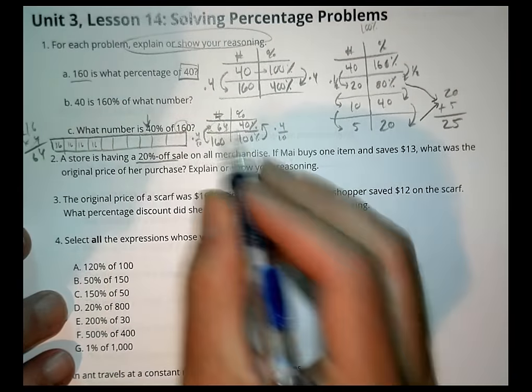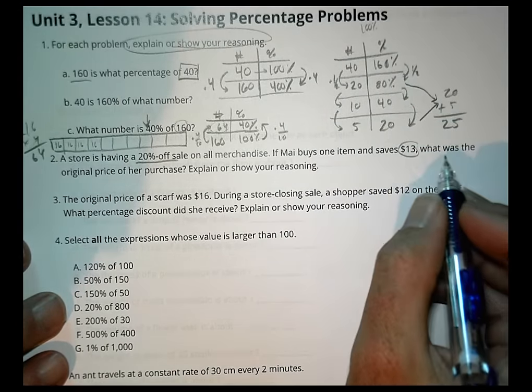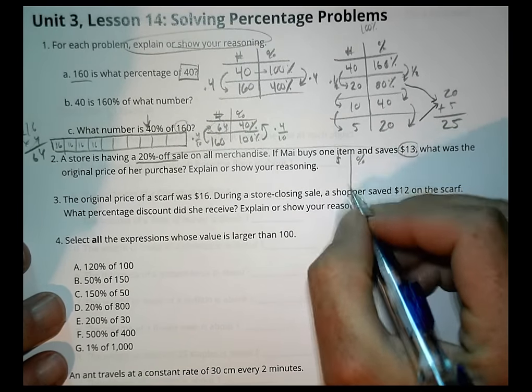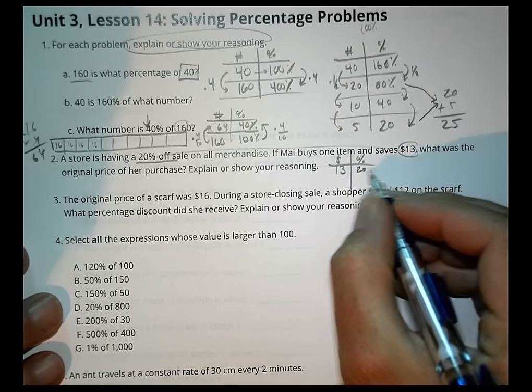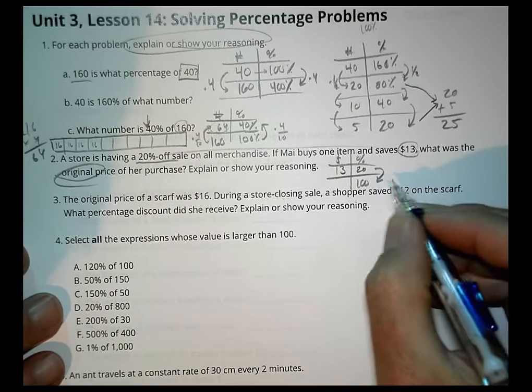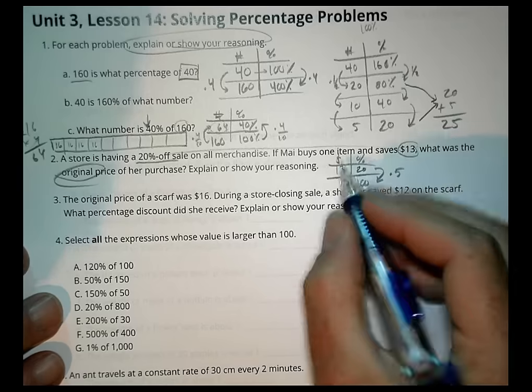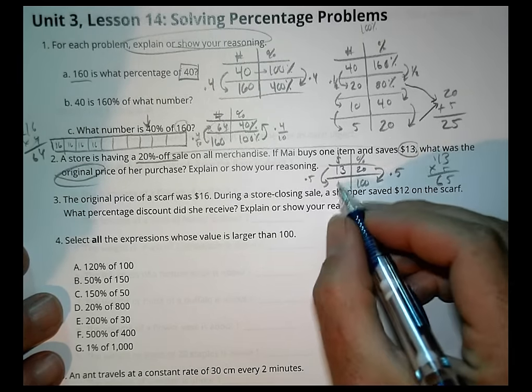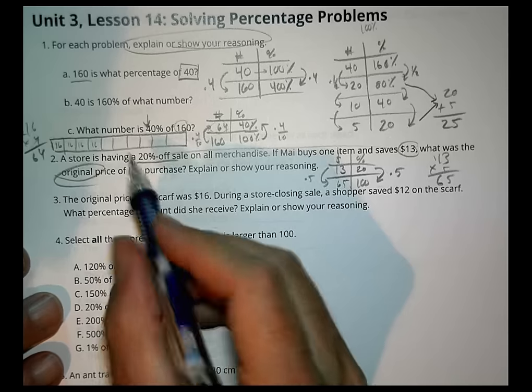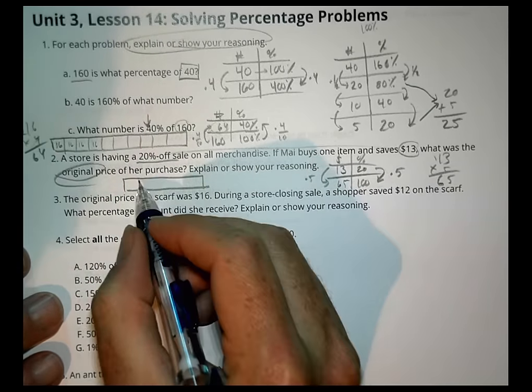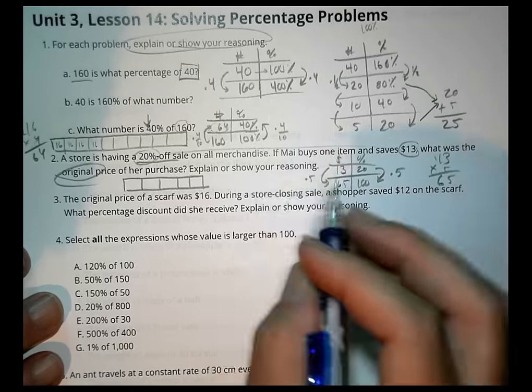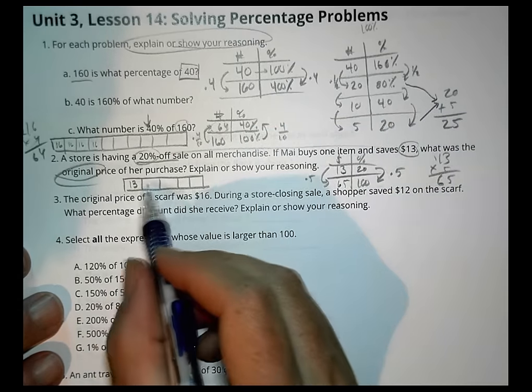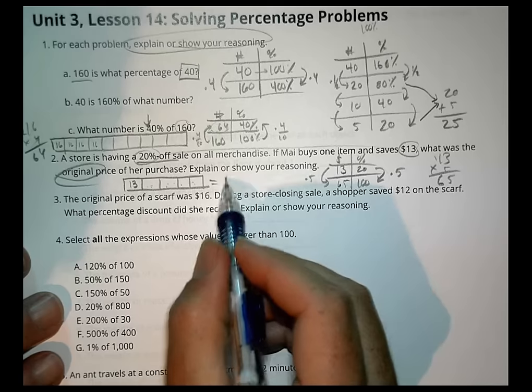Number 2. A store is having a 20% off sale on all merchandise. If May buys one item and saves $13, what was the original price? What do we know? $13 was 20%. We could do our dollars and our percent. We know that $13 was 20%. If I want to find the original price, I'm looking for 100%. 20 times what number gets you to 100? Times 5. So over here, 13 times 5. Let's just do it real quick. 13 times 5, 15, carry the 1, will be 65. So the original price was $65. I could take a look at a tape diagram, break it up into 5 sections. Why 5? Because we have 20% there. The whole thing is 100%. That 20% means that one chunk is 13. I do 13 times 5. Once again, that will give me the same answer, 65.